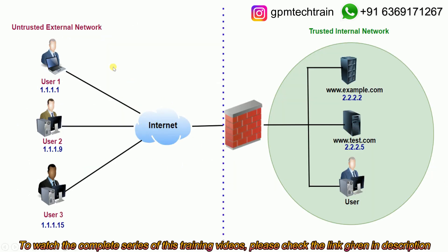Here is a simple example topology where we have an untrusted external network — consider this as the internet — and a trusted internal network, which you can consider as the corporate LAN network. There are a couple of applications running within the trusted internal network, like www.example.com and www.test.com, and also a user within the internal trusted network. In production, you will be seeing multiple zones within this as well.